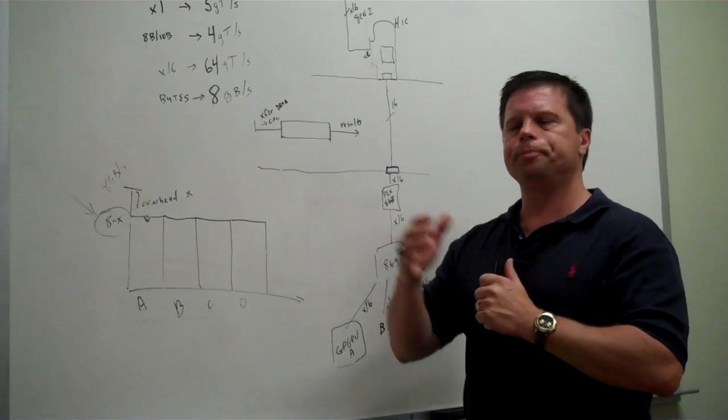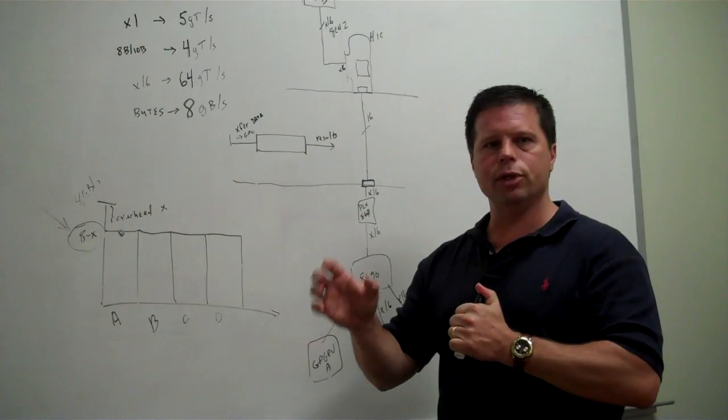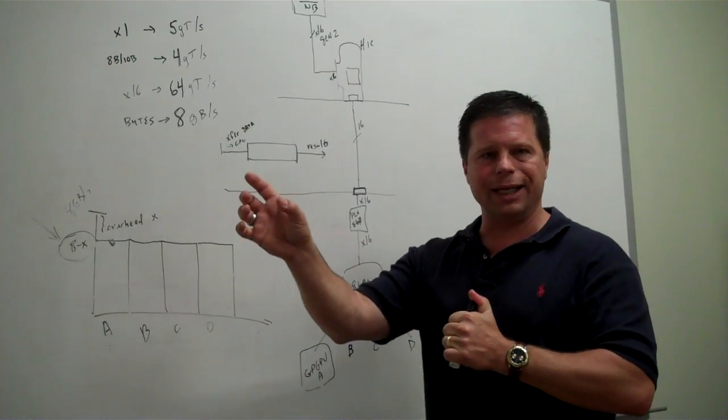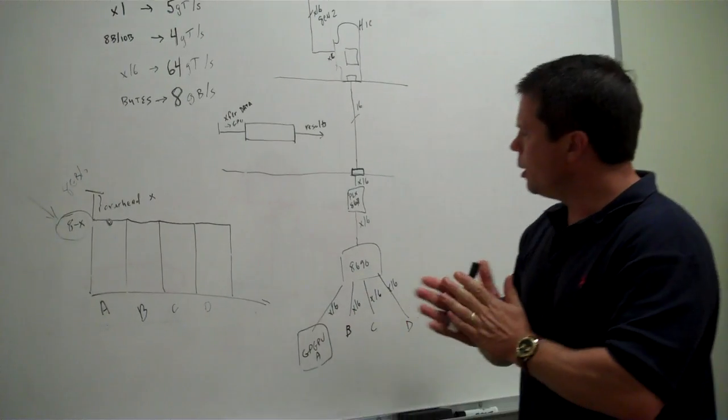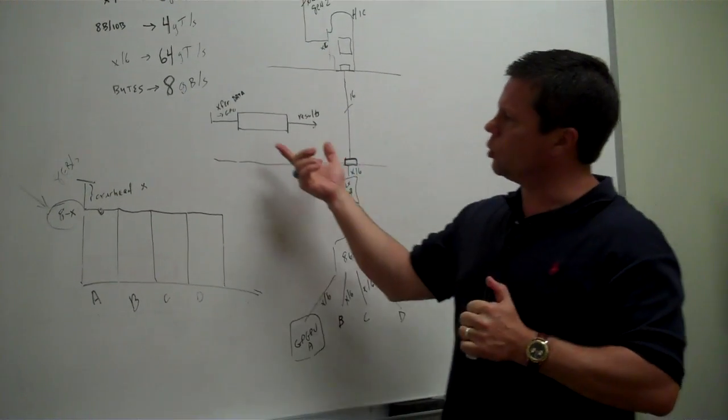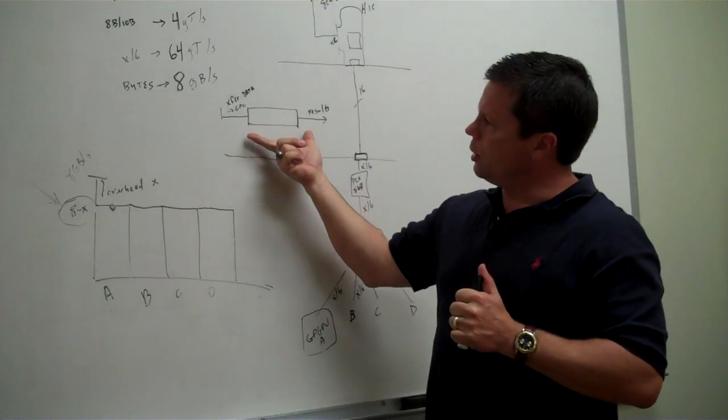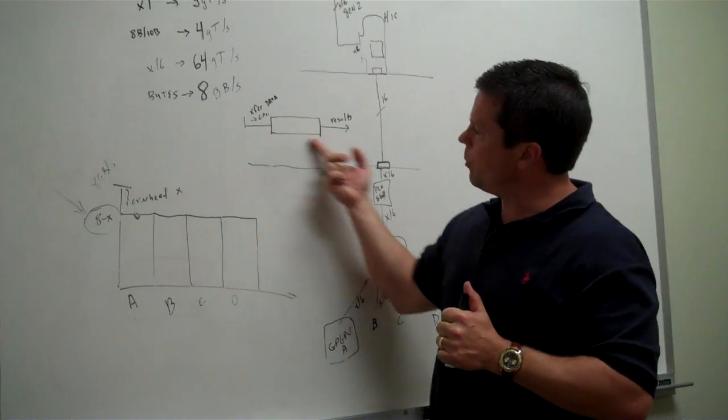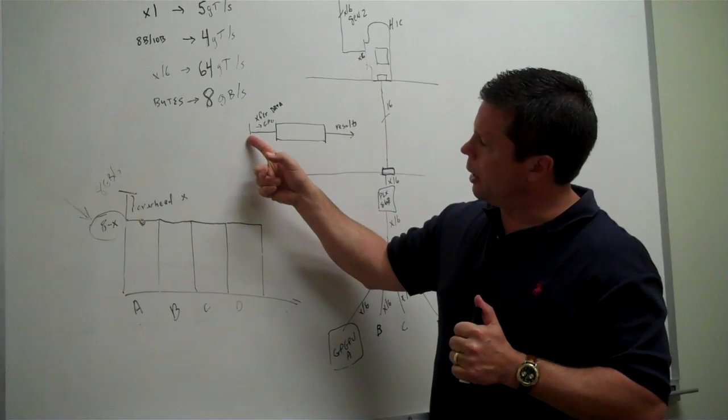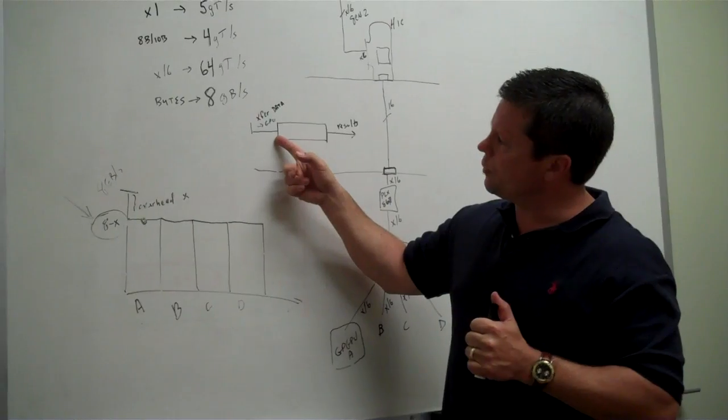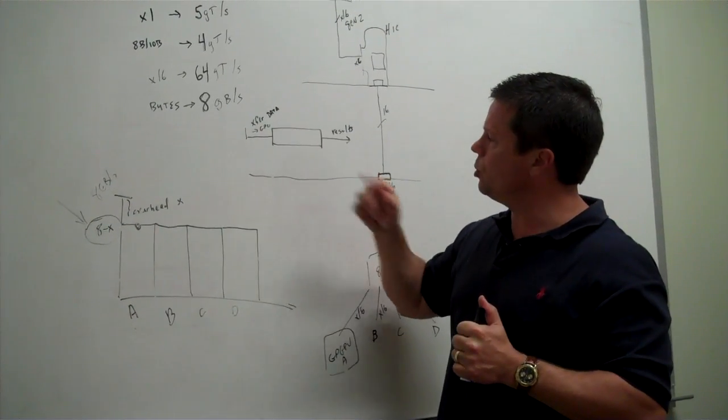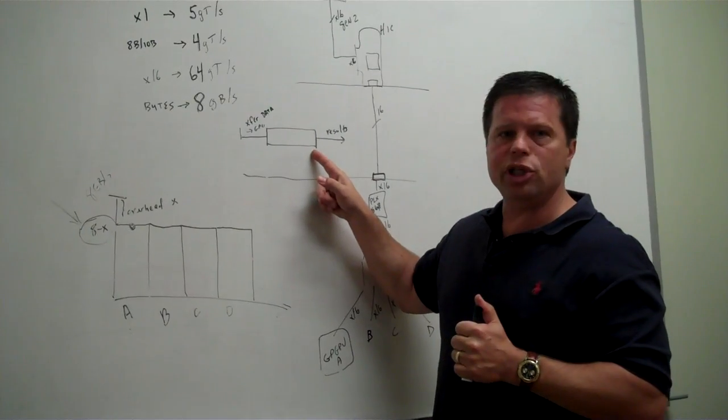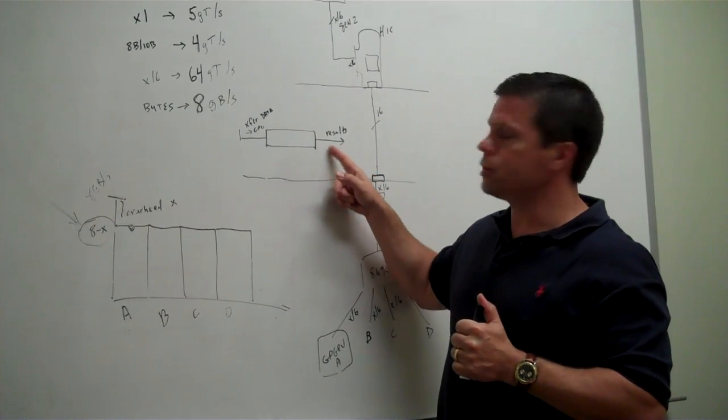Then, the next question becomes, all right, how many GPGPUs do I ratio against a given server node? That is a little trickier. What they do is they look at this timeline from, all right, for the first portion of this timeline, I need to transfer data from the server down to the GPGPU. I crunch the data in the GPGPU, and then I harvest the results.